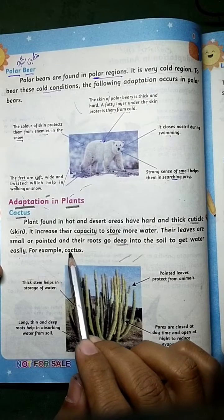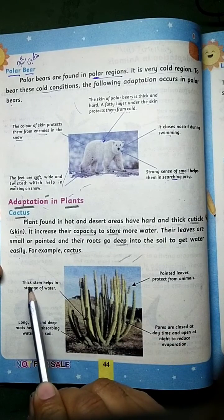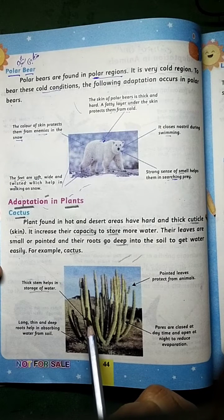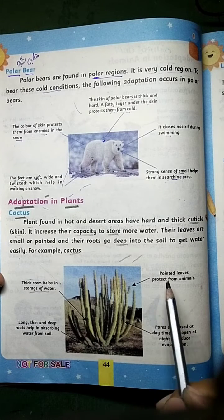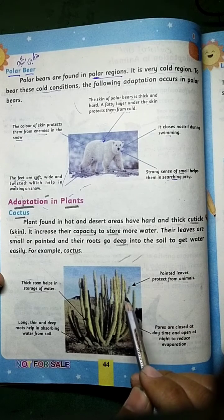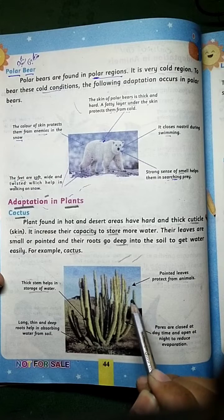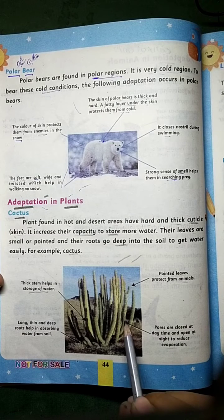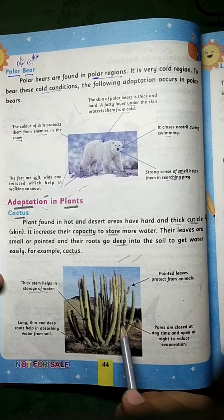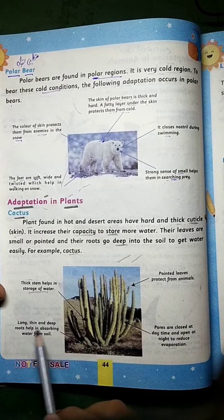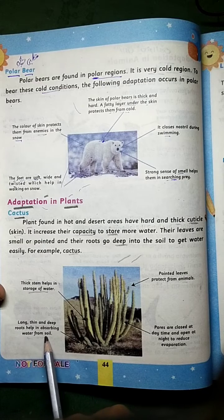For example, cactus: the thick stem helps in storage of water. Pointed leaves protect from animals. Pores are closed at daytime and open at night to reduce evaporation. Long, thin, and deep roots help in absorbing water from the soil.